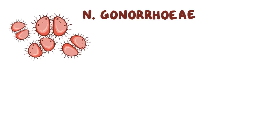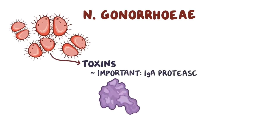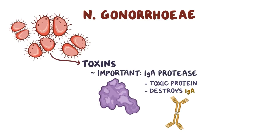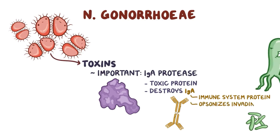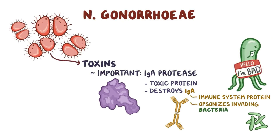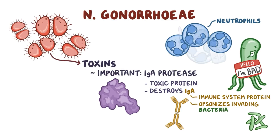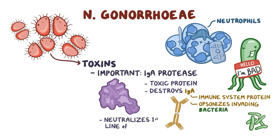Pili aside, other virulence factors of N. gonorrhoeae include toxins. The very important one is IgA protease, a toxic protein that this bacterium uses to destroy immunoglobulin A, or IgA. IgA is an immune system protein that's normally found in the mucosal secretions, like those produced by the vagina or the cervix. IgA helps with bacteria opsonization, meaning it tags the bacteria so that neutrophils can recognize and destroy them. So IgA protease neutralizes the first line of mucosal defense.